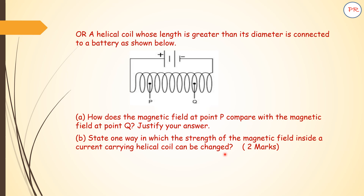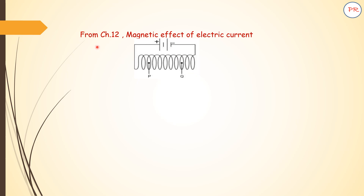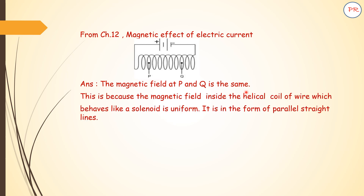This is for two marks and the question is from chapter number 12, that is magnetic effects of electric current. You should remember that a helical coil behaves like a solenoid. The magnetic field is the same everywhere inside — it is uniform. So the magnetic field at point P and point Q is the same. This is because the magnetic field inside a helical coil, which behaves like a solenoid, is uniform and in the form of parallel straight lines.